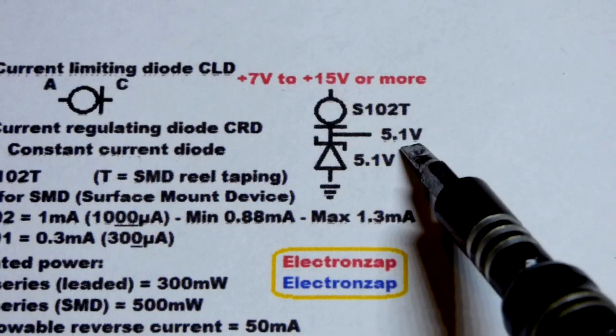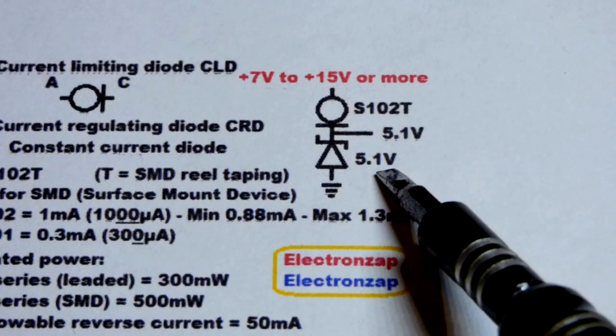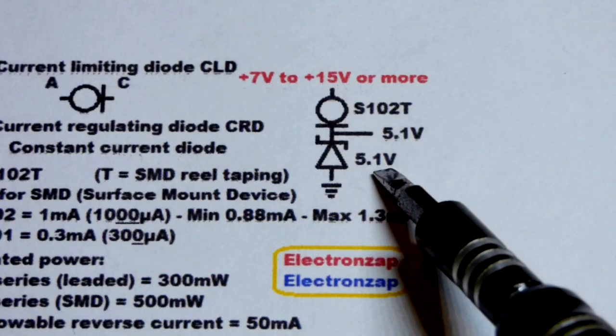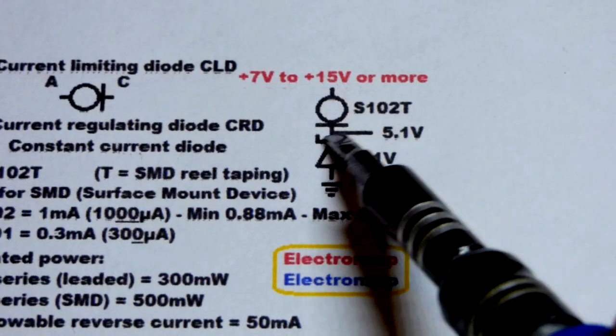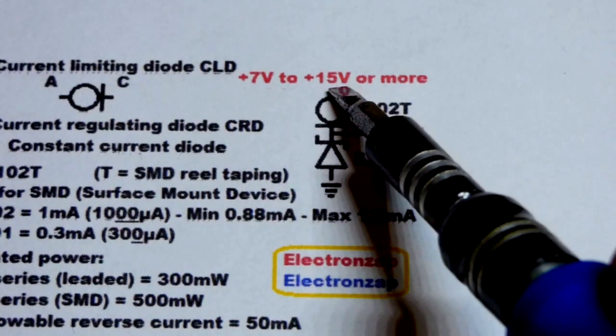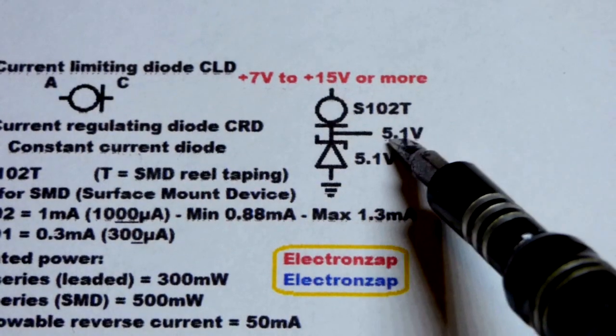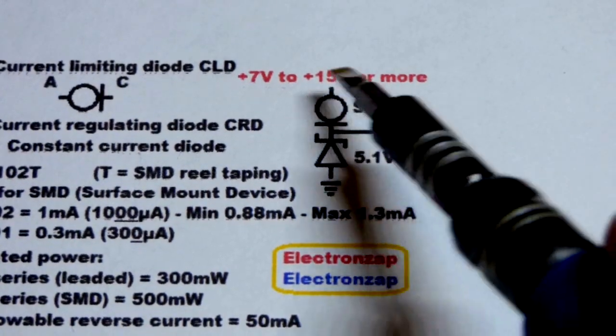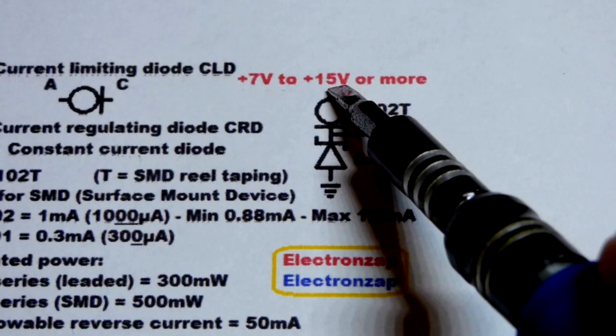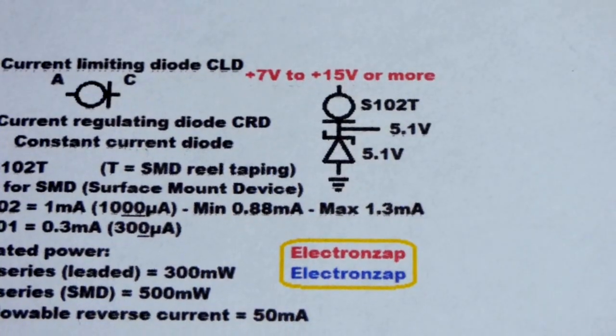So even though it was a 5.1 volt zener diode at 1 milliamp, it was giving us 5.16. And so that was the output we got, even as we changed the voltage from 7 volts to 15 volts. And as we saw, it's actually a relatively high wattage component, and so we could have gone a lot higher than 15 volts, but that's what I demonstrated. So that's the value that I put there.